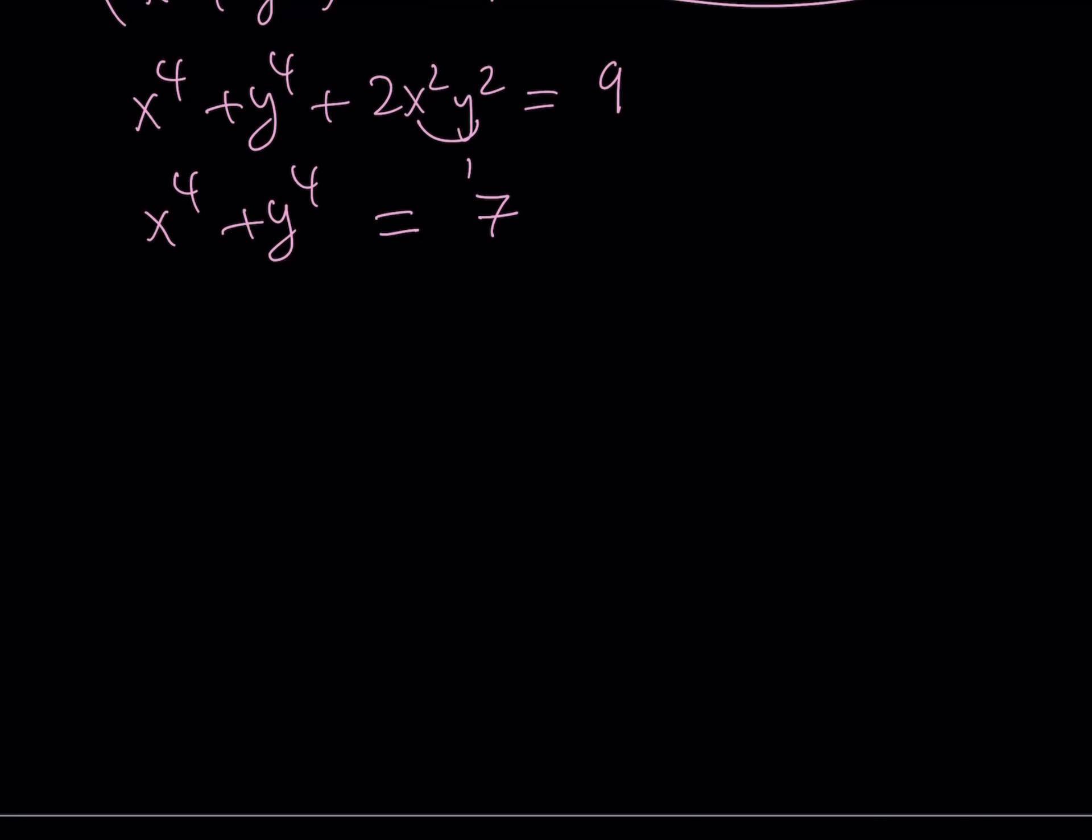My goal was to find x to the 8th and y to the 8th. There are some. So, let's square this one more time. This is going to give us 49, because 7 squared is 49.